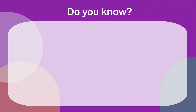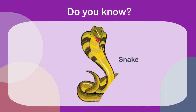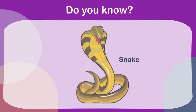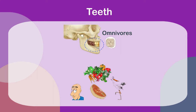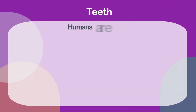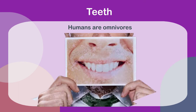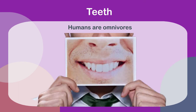Do you know poisonous snakes also use their fangs to inject poison into their prey to kill them? Since omnivores eat both plants and animals, they have a mix of both flat and sharp teeth. Humans are omnivores too, so you can check your teeth in the mirror and see what kind of teeth you have.